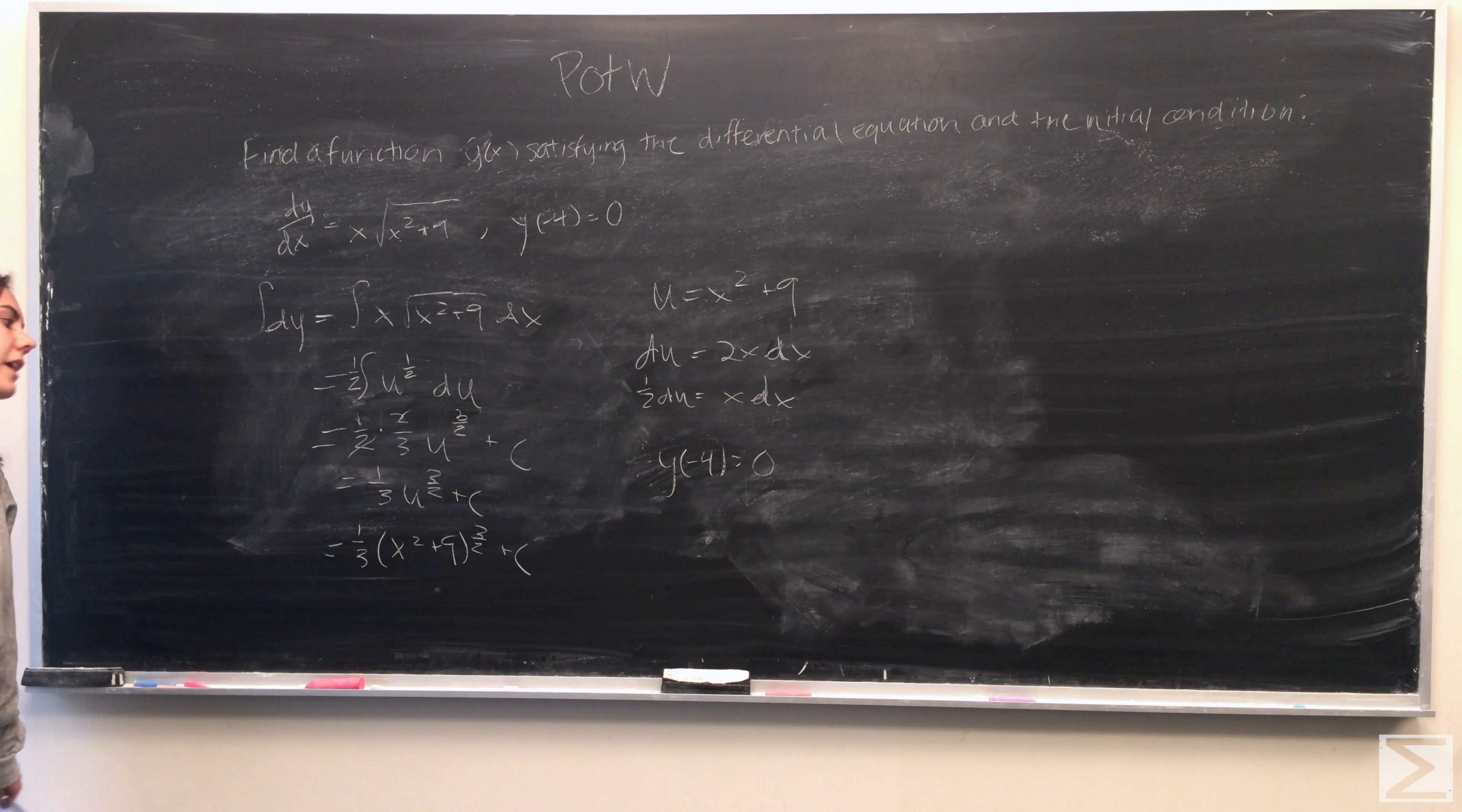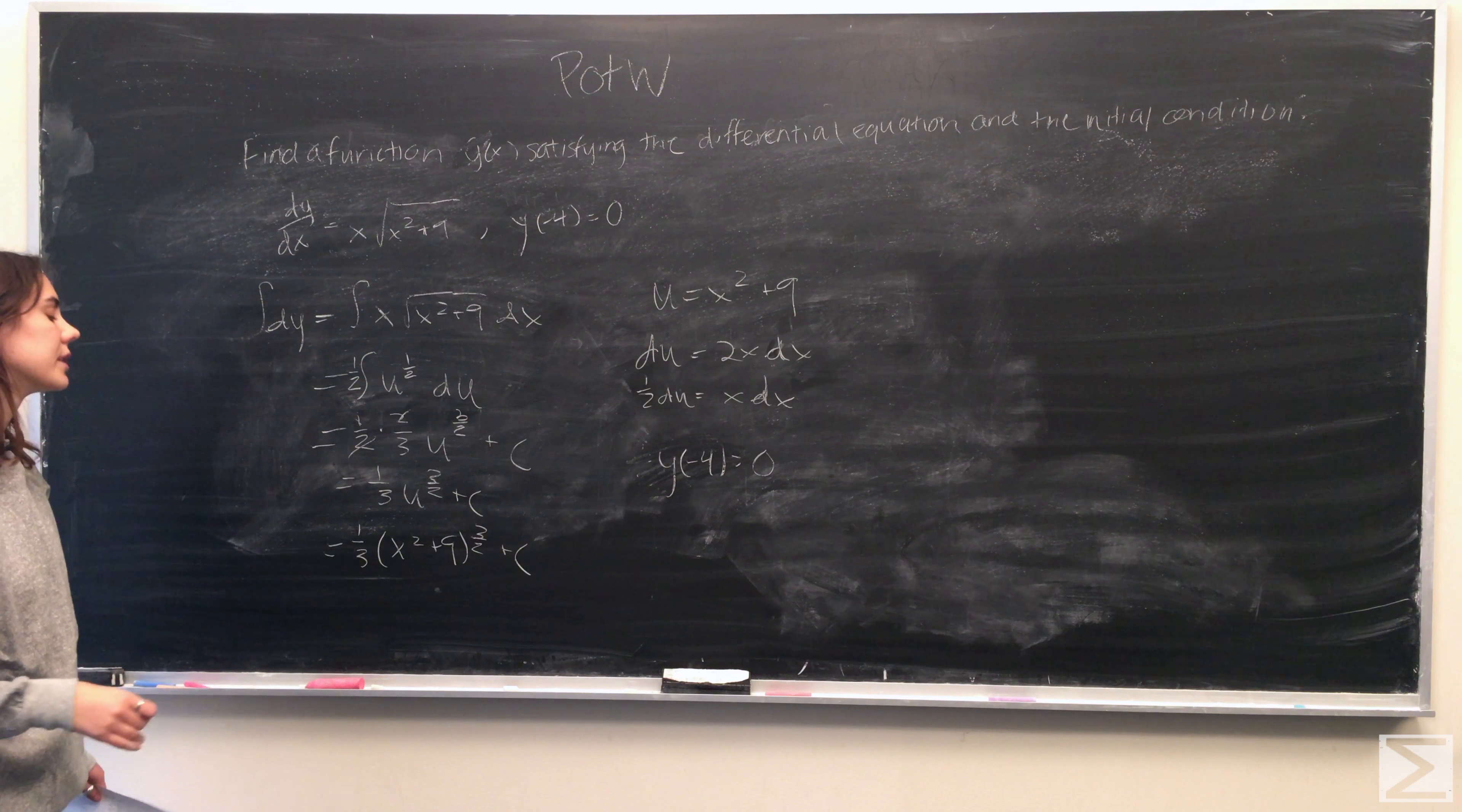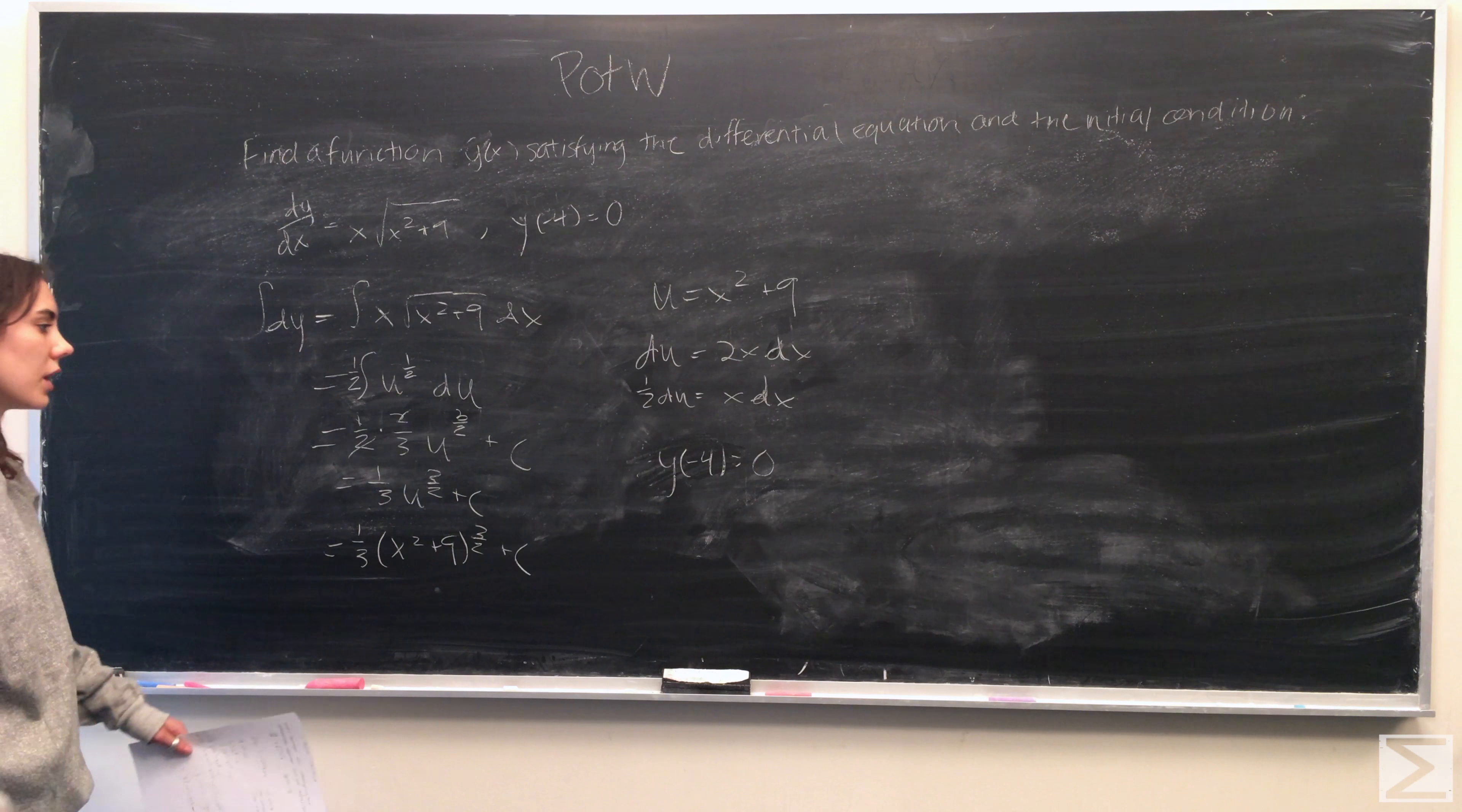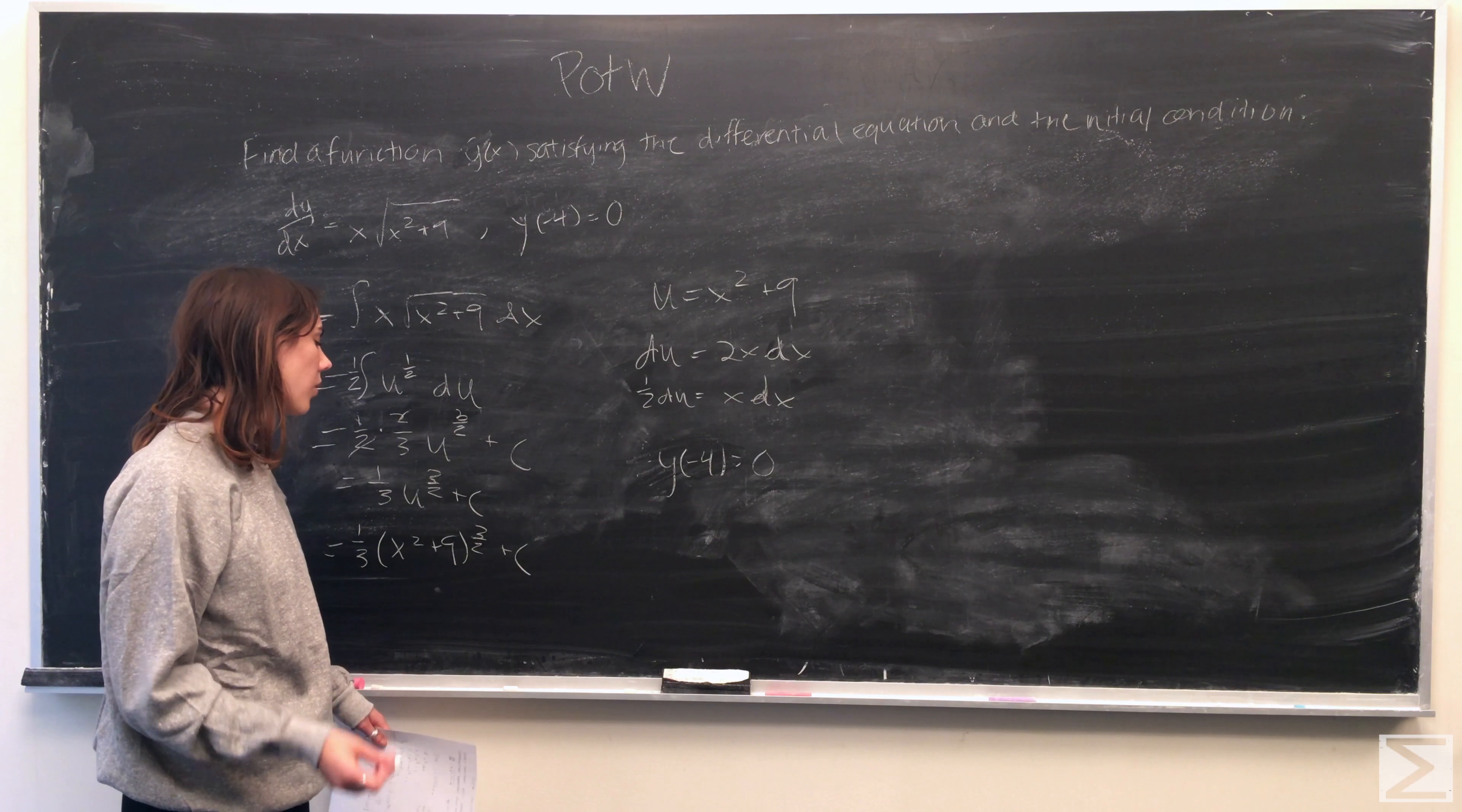So we first substitute back in what u is equal to. So we get 1 third times x squared plus 9 to the 3 over 2 plus c. Now we're going to substitute in y of negative 4 to solve for c.